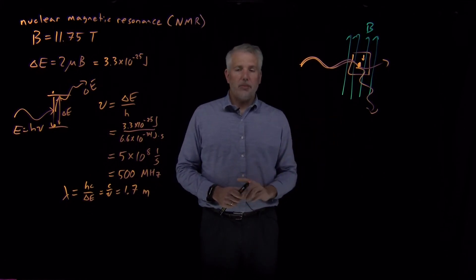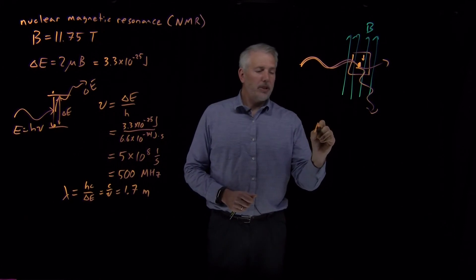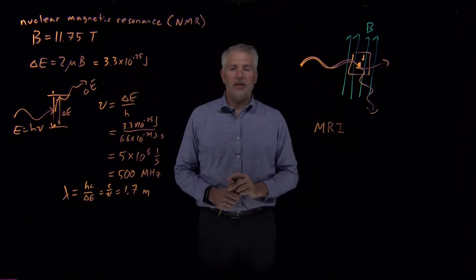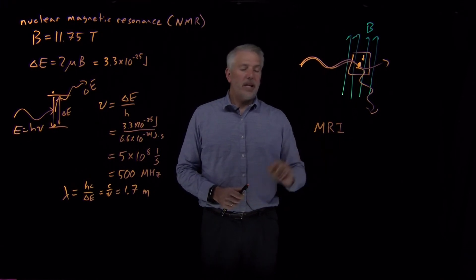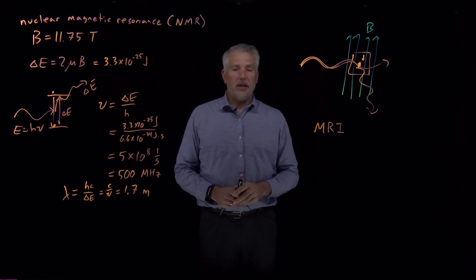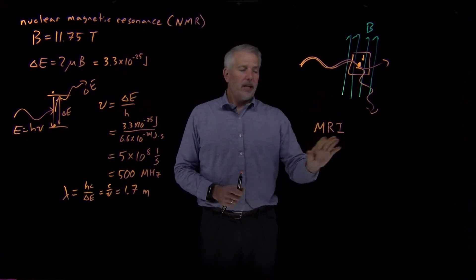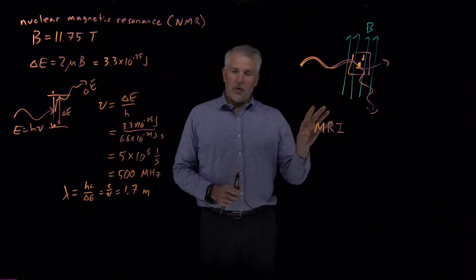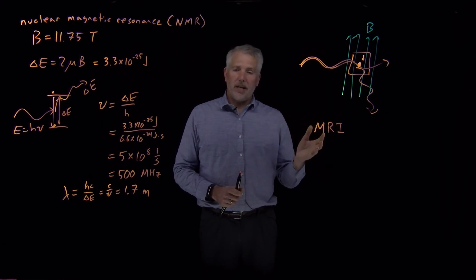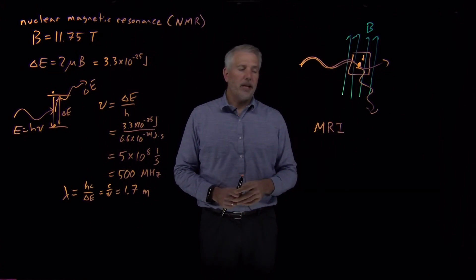Modern-day instruments like the MRI — if you go to the hospital and get a magnetic resonance imaging scan — are essentially a very advanced, updated version of the same technique. An MRI is basically just a proton detector where radio frequency energy is shone at the human body, and by detecting which areas have more or fewer protons, using some additional techniques on top of that, you get the MRI scan.